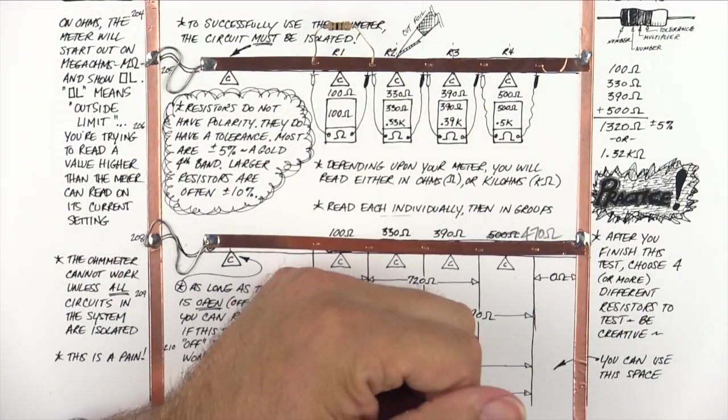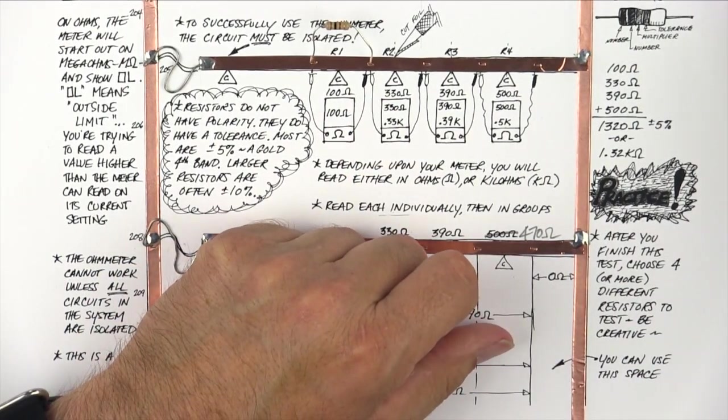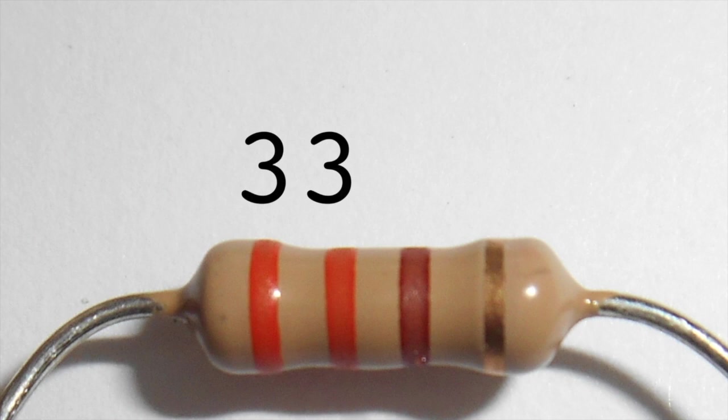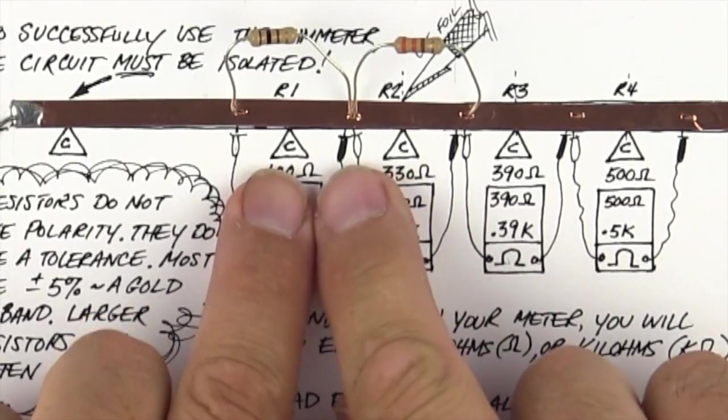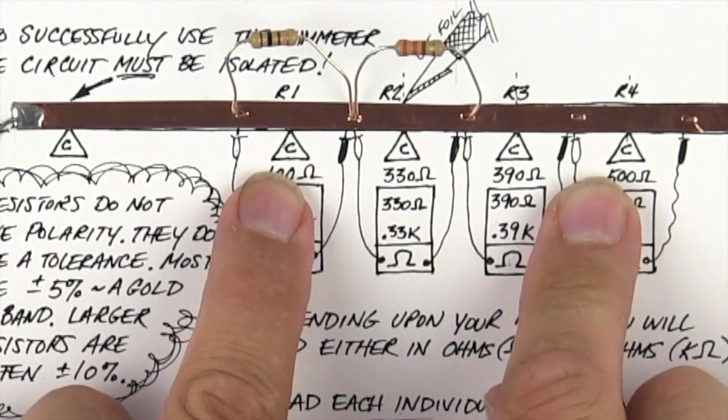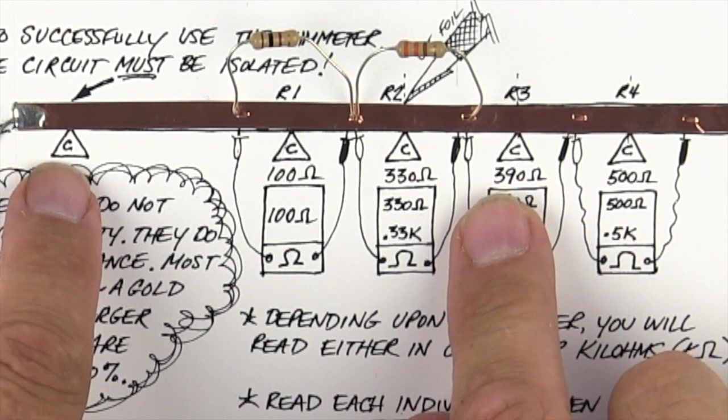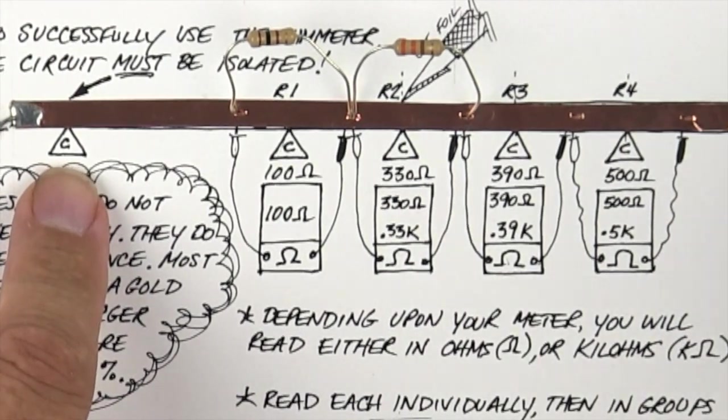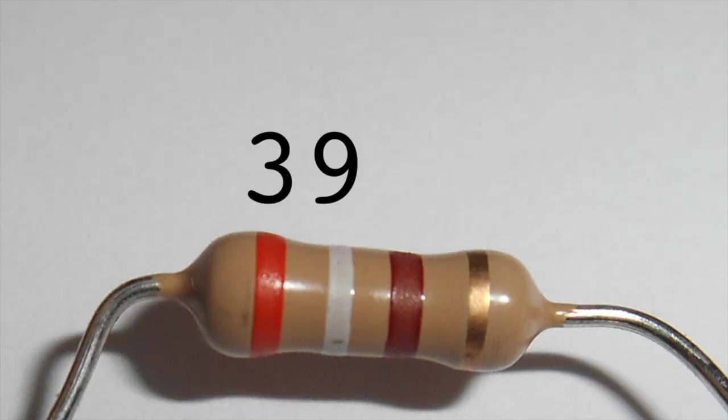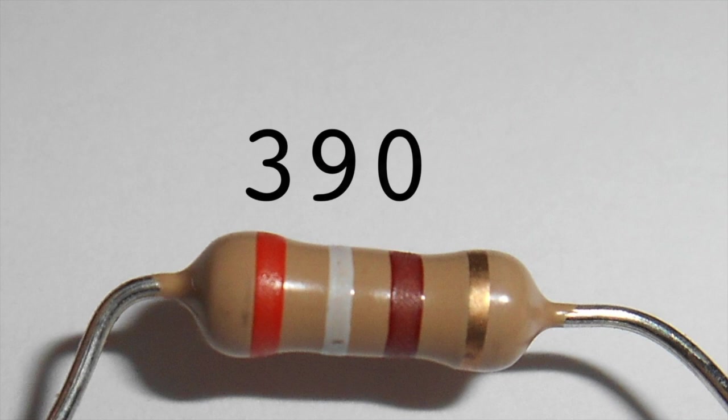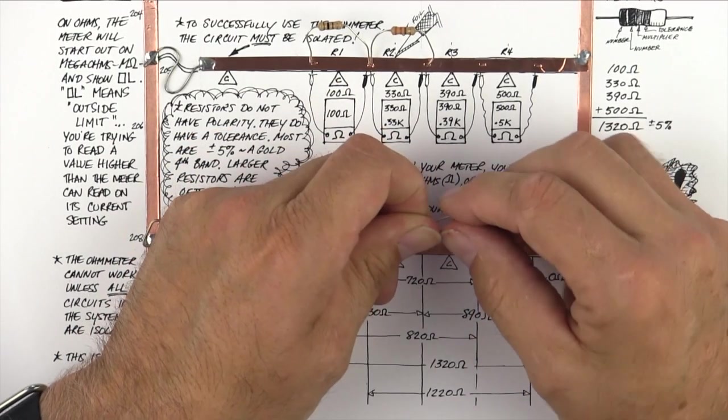The next one was 330. Orange is 3 and brown is 1. So orange, orange, brown is 33 and 1, 0. So that would be 330. Notice the cut marks here, because we're going to have to cut these to make it work. The next one is 390. So it's going to start with orange. White is 9. And then brown is 0. So that would be 39. I'm sorry, brown is 1. So it would be 39 with 1, 0. So that's 390.